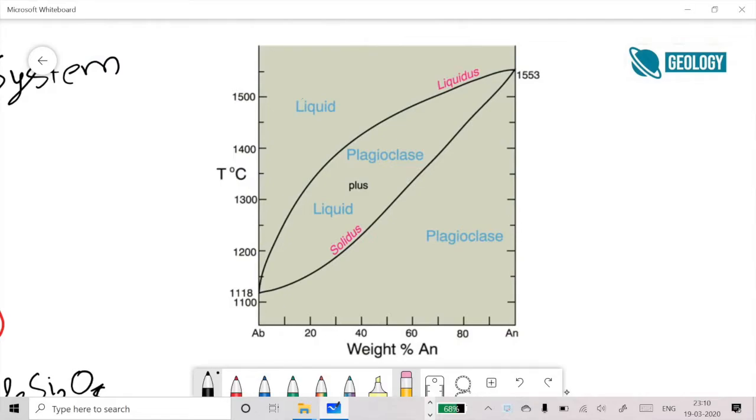Now that we know what a solid solution is and we understand this phase diagram of albite and anorthite, we are going to understand the melting and crystallization behavior within this solid solution system. To start with, I will try to understand the melting behavior.